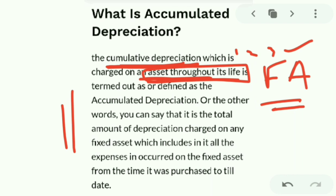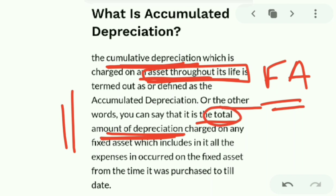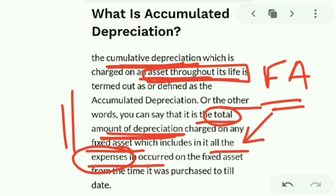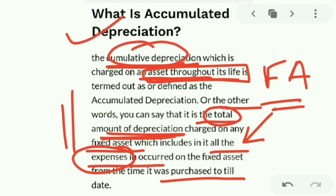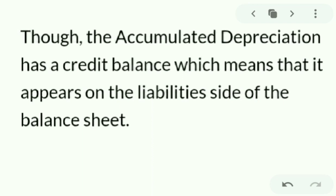In the first year, second year, third year — all years are being added up. In other words, the total amount of depreciation charged on any fixed asset includes all expenses incurred on that fixed asset, including expenses for repairing it. From the date of purchase, whatever expenses you have incurred on the fixed asset will be added to the depreciation cost list. So accumulated depreciation is the cumulative or total depreciation covering all such expenses.